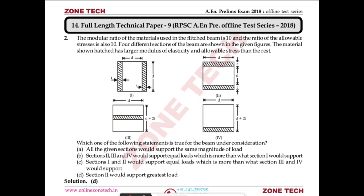Among the four options, if we convert the hatched portion into the second material's equivalent, it forms an I-section shape. We know that the I-section has the largest section modulus, so the maximum allowable stress will occur in the second portion. Therefore, the answer is D — the second section supports the greatest load.